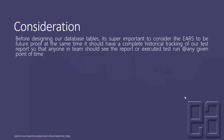Before designing our database tables, it's super important to consider the design to be future-proof. At the same time, it should have complete historical tracking of our test reports so that anyone in the team can see the report or execute the test at any given point of time. We need to make sure our Execute Automation reporting system is future-proof — that's very important — and it should have historical tracking as well.